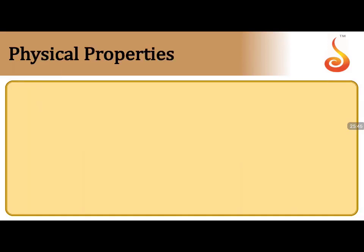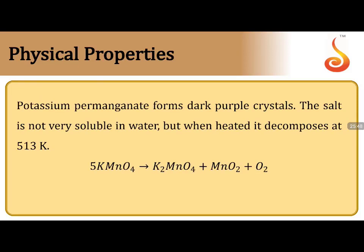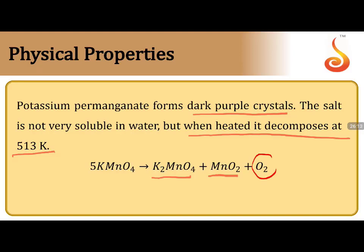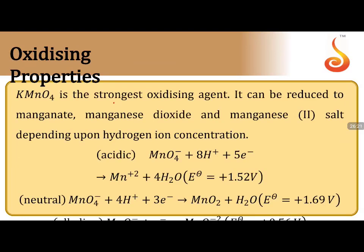KMnO₄ forms dark purple crystals. The salt is not very soluble in water, and when heated it decomposes at 513 K. Directly heating KMnO₄ gives potassium manganate (K₂MnO₄) and MnO₂, releasing oxygen gas. This equation should be remembered stoichiometrically as well.